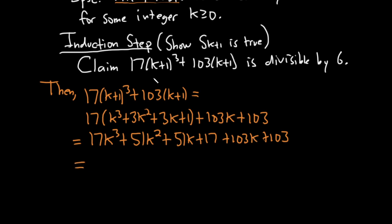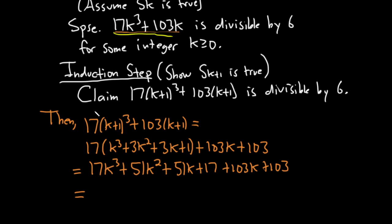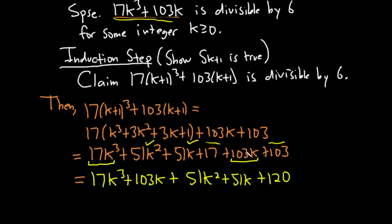We need to use our induction hypothesis, which is 17k³ + 103k. We can see those terms here. So we regroup: 17k³ + 103k, plus 51k², plus 51k, plus 17 + 103 which is 120.